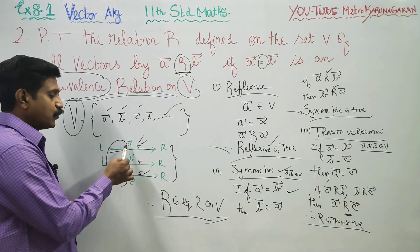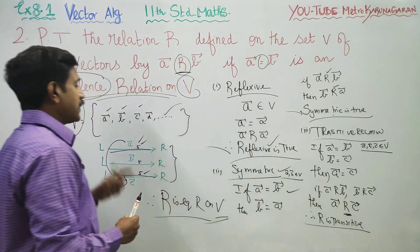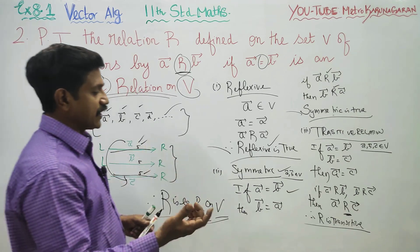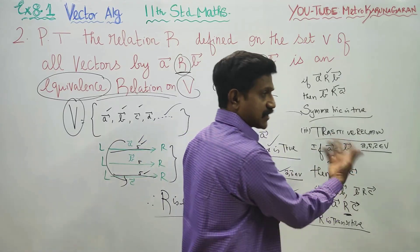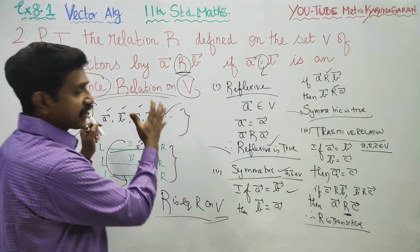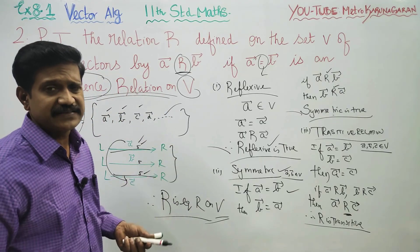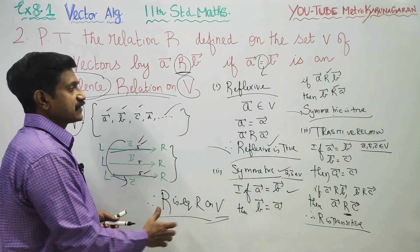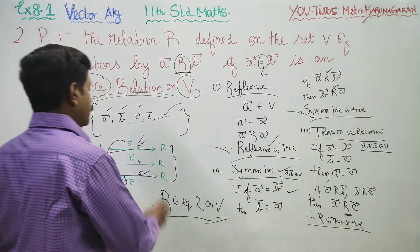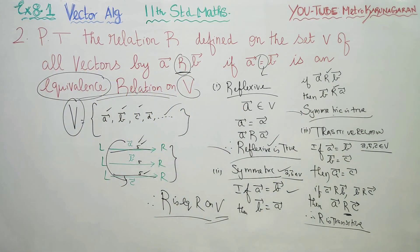I chose three equal vectors A, B, C to make the proof easy. If A is not equal to B or B is not equal to C, the condition fails. By choosing equal vectors, you can satisfy all conditions and declare R as an equivalence relation. Thank you.